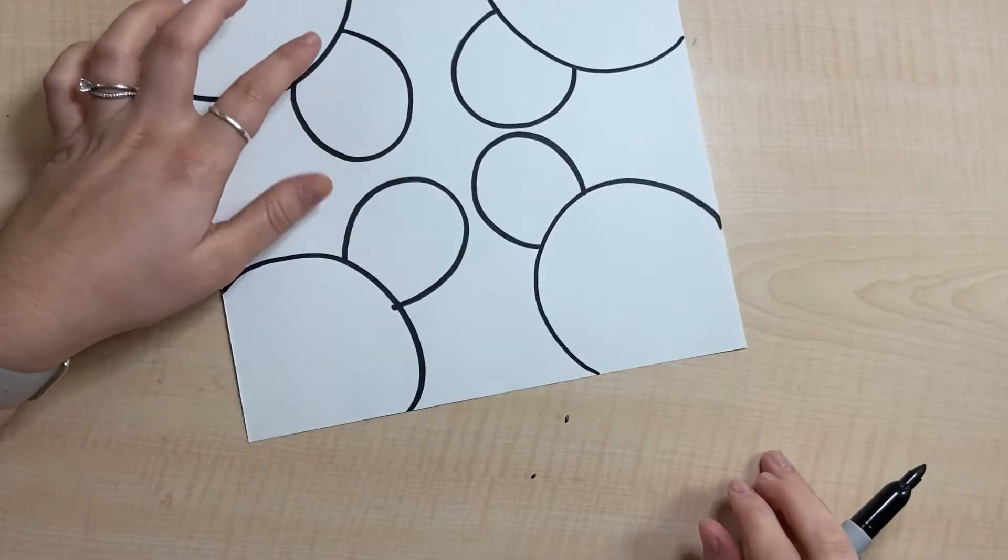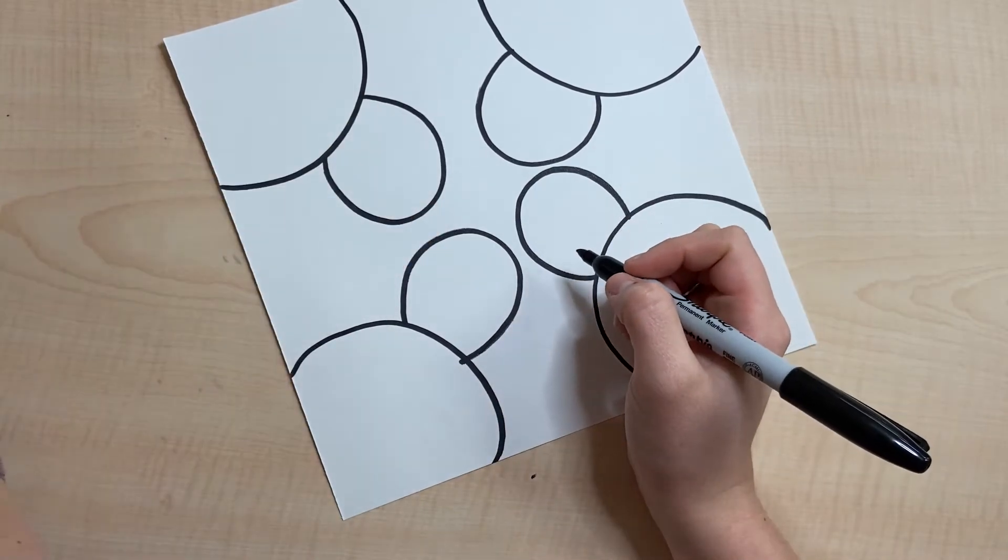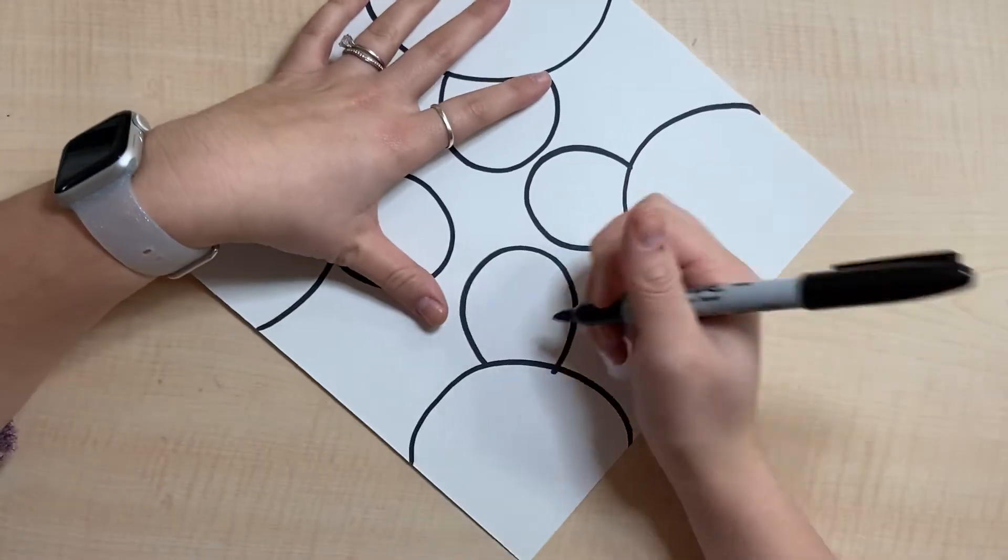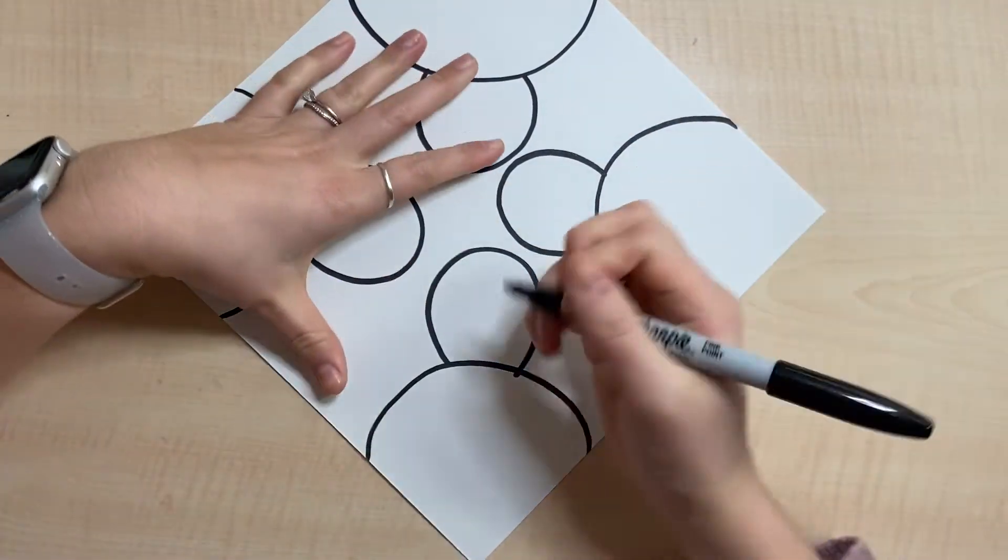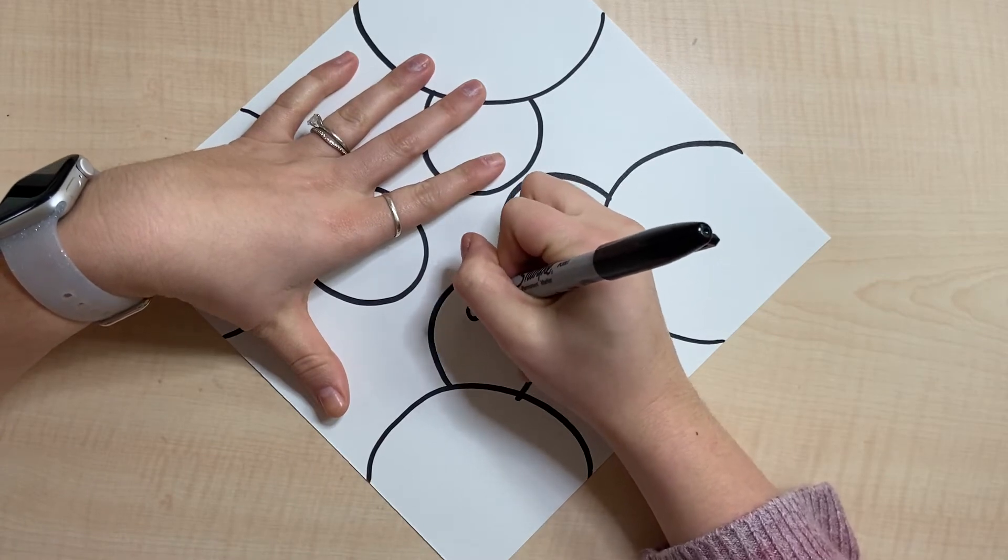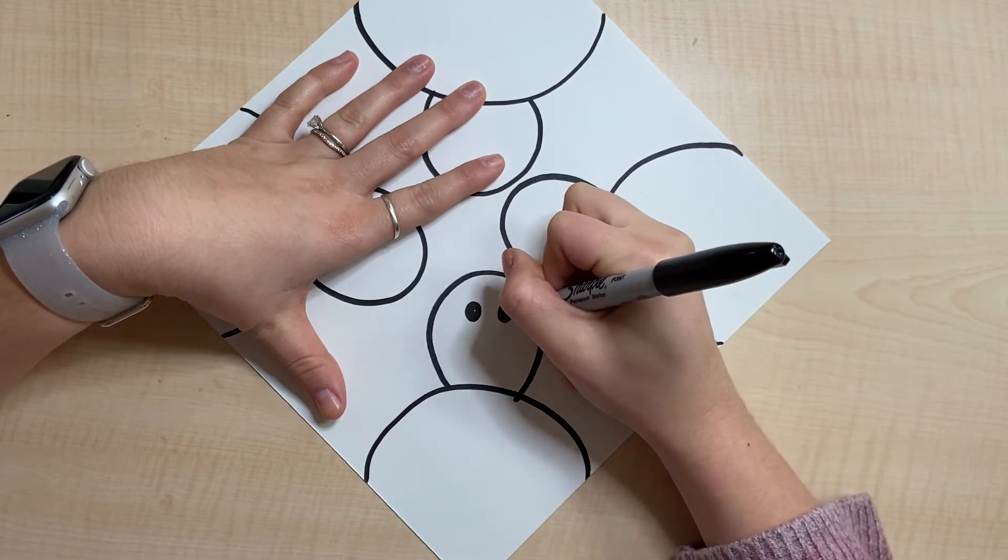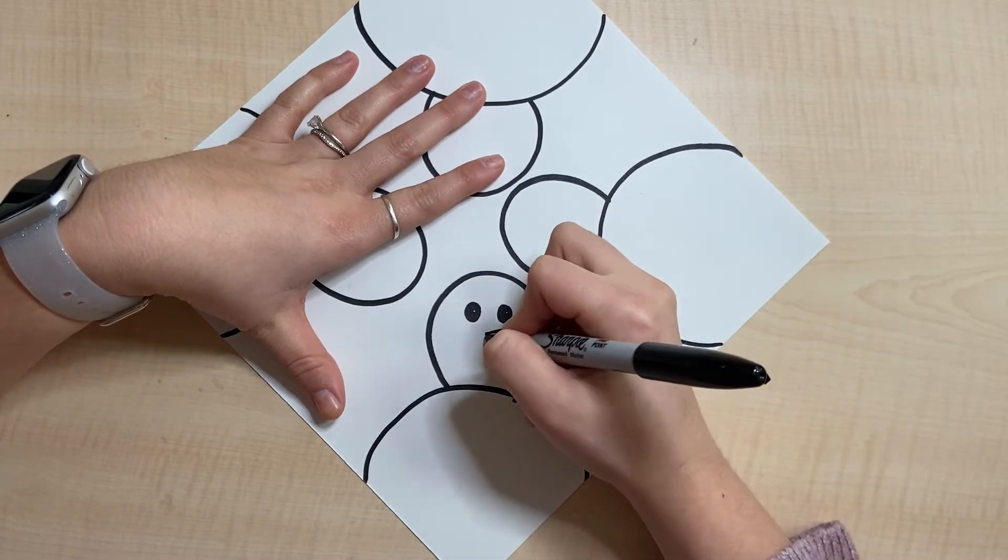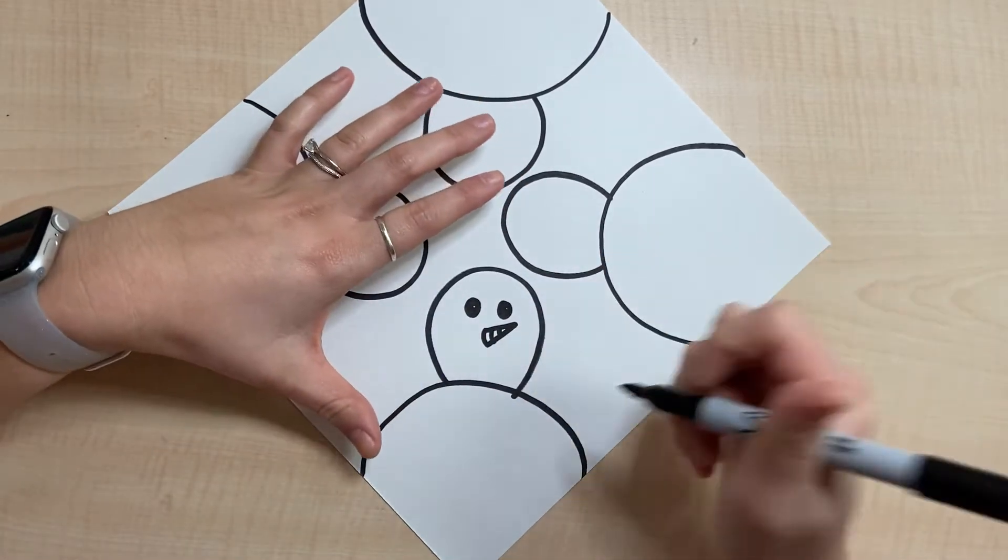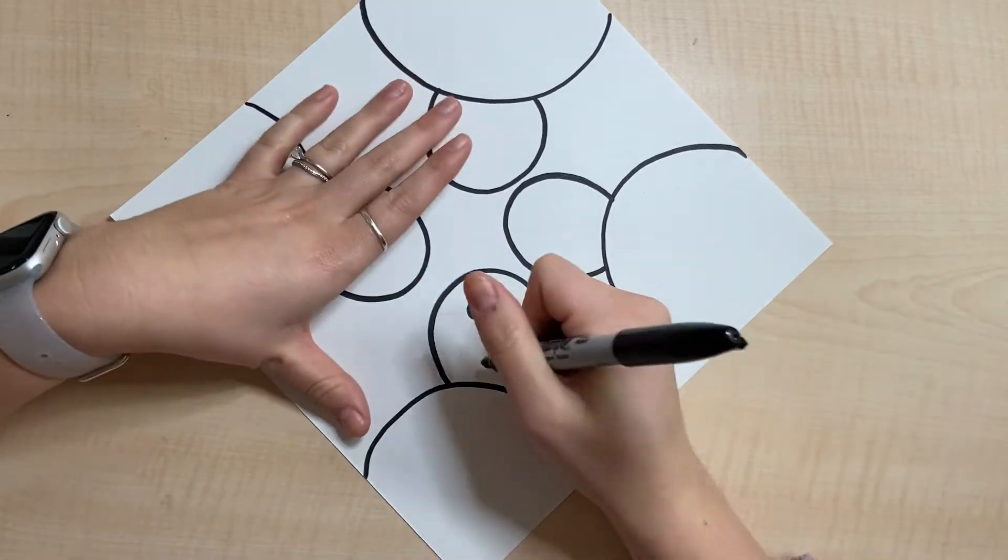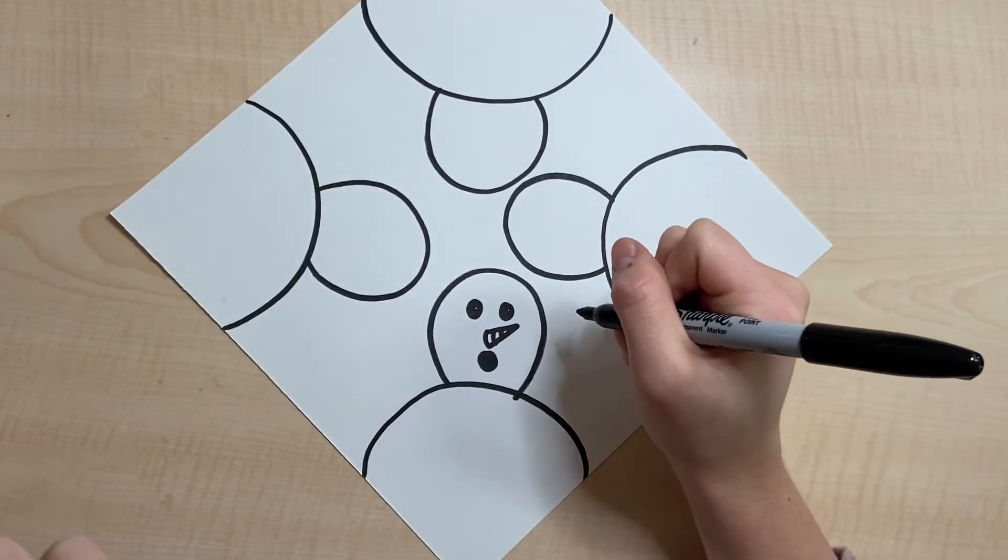Okay, let's add some facial features. I'm gonna switch out sharpies because this one is dying. Let's add some eyes and a nose. I kind of did the nose at an angle so it looked like you were looking up at the snowman. I'm just gonna draw the snowman's mouth to be open like they're shocked that you're on the ground.